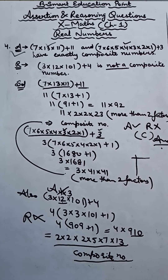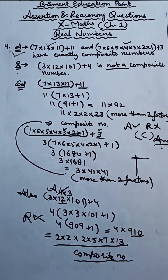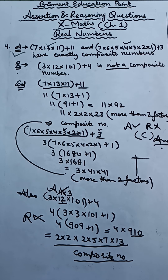I hope this is clear to everyone. So students, these four topics are the basis of real numbers: composite numbers, rational and irrational numbers, HCF-LCM, and terminating and non-terminating decimal expansion. These are the 4 main topics on which you will get assertion and reasoning questions in exams. I hope this video helps you. Thank you so much for watching. Kindly like and share this video, and also subscribe to the channel.